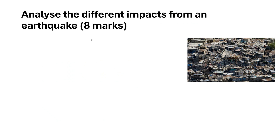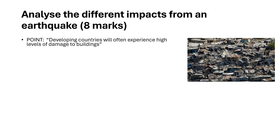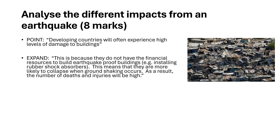So I've had a go at approaching this question. There's the question at the top — this wouldn't be my complete answer, just my first argument. I'd try and write at least two or three of these with 11 minutes to do this. This would be my point: 'Developing countries will often experience high levels of damage to buildings.' It's only one sentence, stating my entire argument very sharply. I've then got a couple of sentences expanding on that using wider geographical knowledge: 'This is because they do not have financial resources to build earthquake-proof buildings' — giving an example of rubber shock absorbers — 'This means they are more likely to collapse when ground shaking occurs and as a result the number of deaths and injuries will be high.' I've used connectives throughout to make sure it flows and the examiner knows everything is connected.